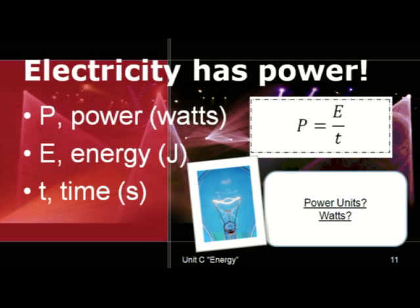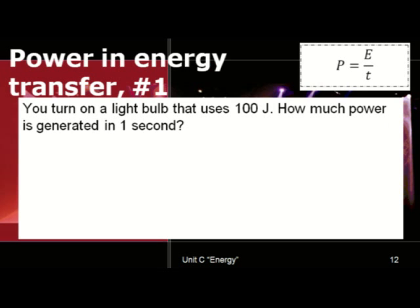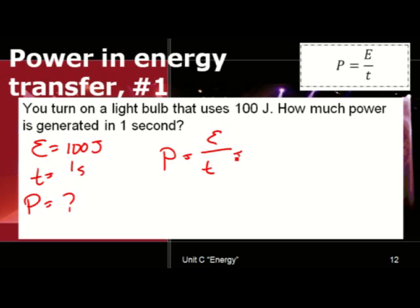So let's look at a sample problem using the power equation where electricity is used over time. The problem says you turn on a light bulb that uses 100 joules of energy. How much power is generated in one second? We write down our variables. We know that the electrical energy being used is 100 joules. The time is one second, and we want to know power in terms of electrical power, which is what we don't know. Our equation is power is equal to the electrical energy used over time. We have 100 joules of energy divided by one second. That equals 100 watts.